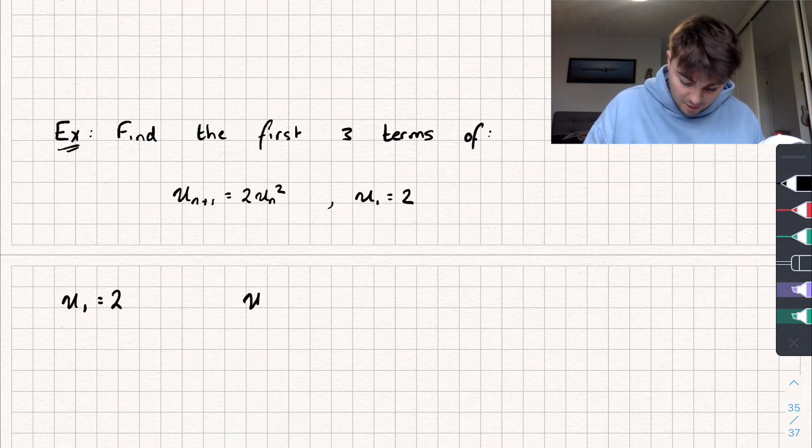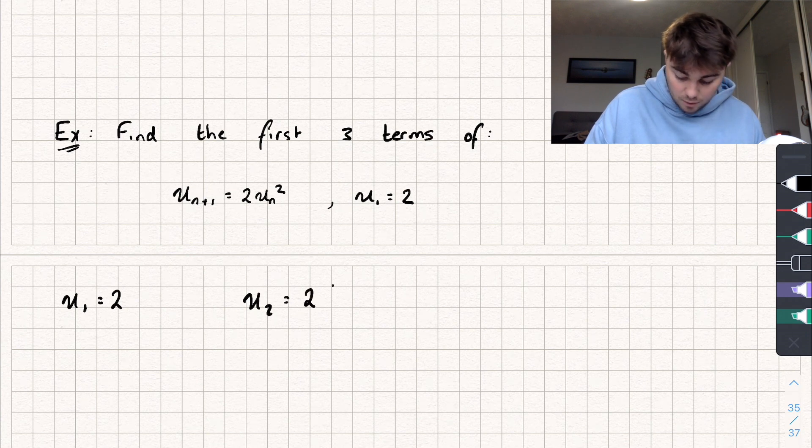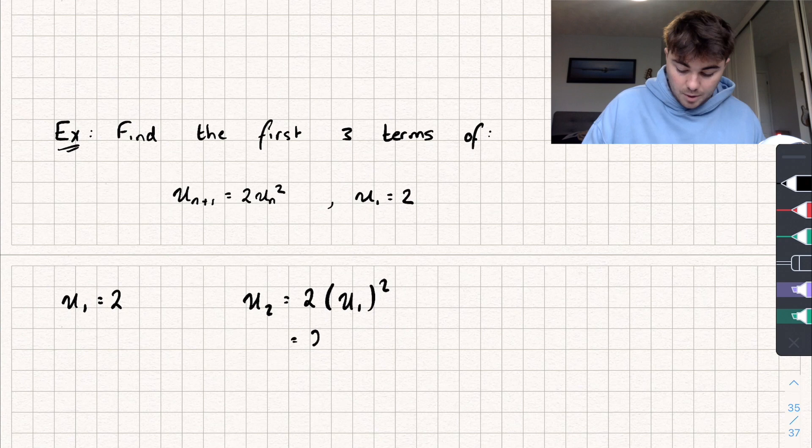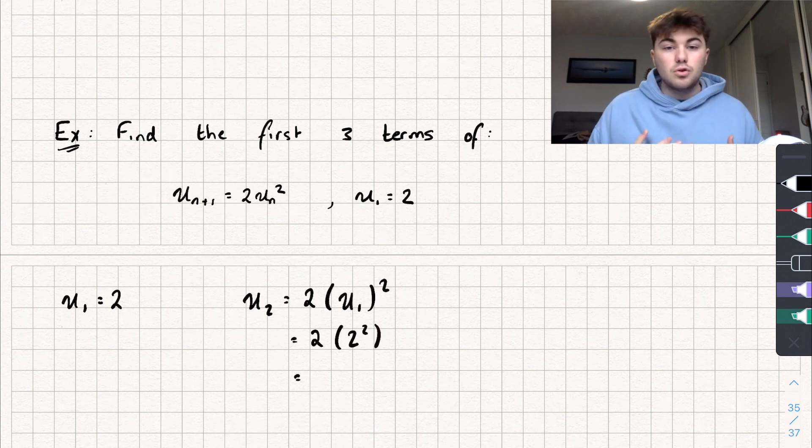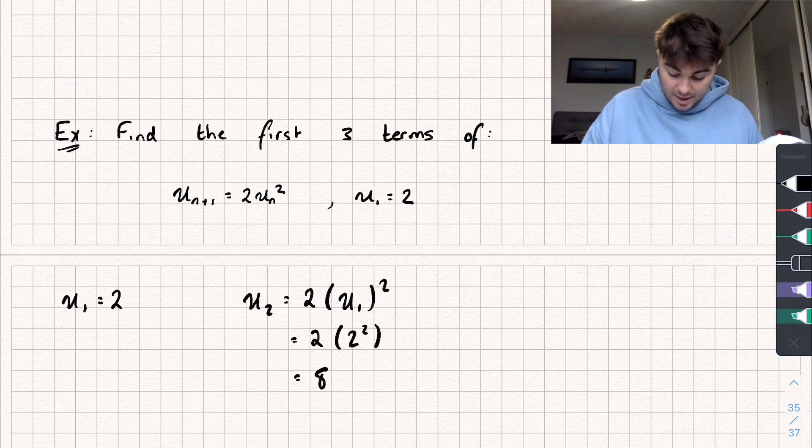So the second term, u_2, that's going to be equal to two multiplied by u_1 squared, which is going to be equal to two multiplied by two squared. And if we work that out, two squared is four, four times two is eight.